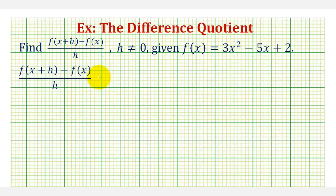So for the first step, we want to determine f of the quantity x plus h, which means x plus h will be the input into the function, so we'll substitute x plus h wherever we see an x. So instead of three x squared, we'll have three times the quantity x plus h squared. And then instead of minus five x, we'll have minus five times the quantity x plus h, and then we have plus two. So this is f of the quantity x plus h.